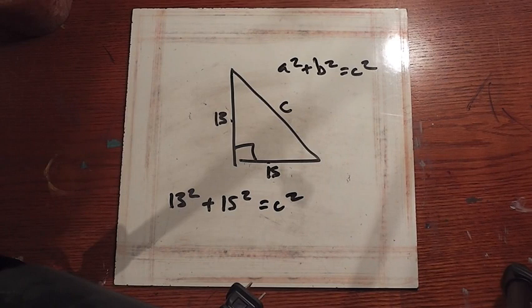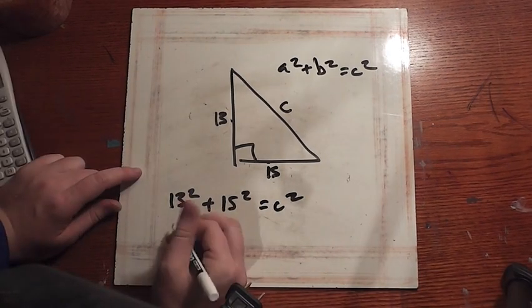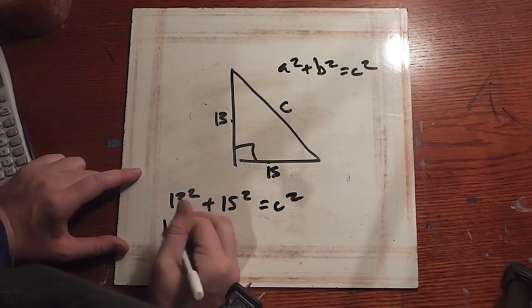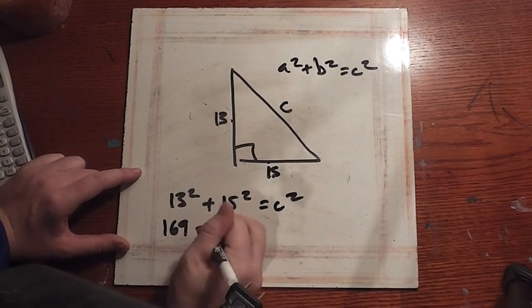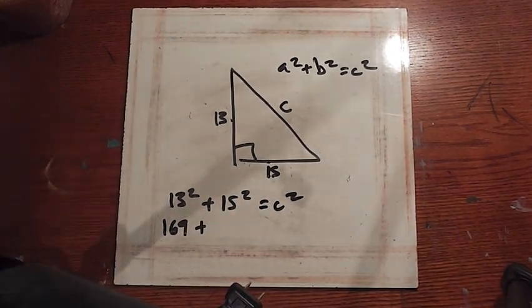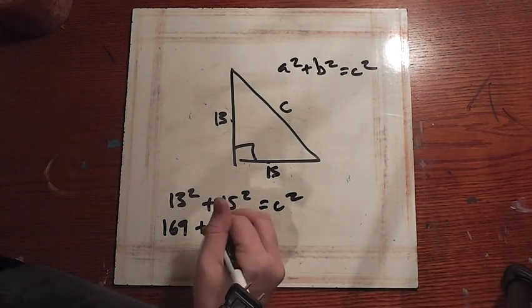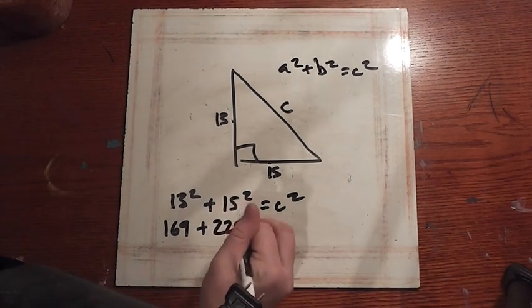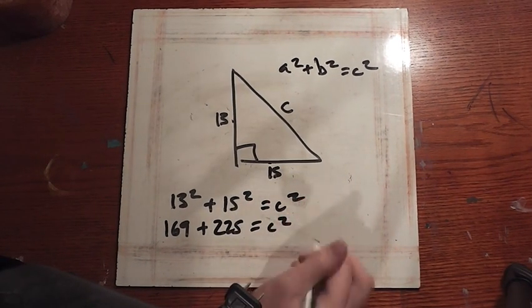This is when you bring in your calculator. Let's do 13 squared — 13 squared is 169. Plus, do 15 squared on your calculator: 225. Equals C squared.